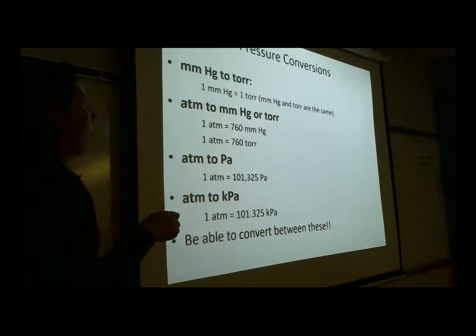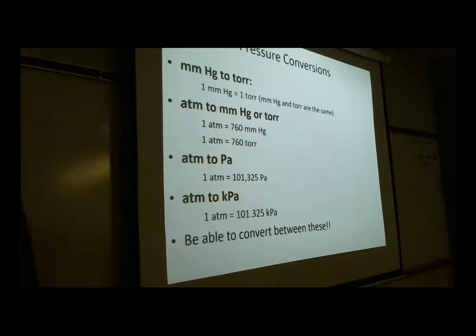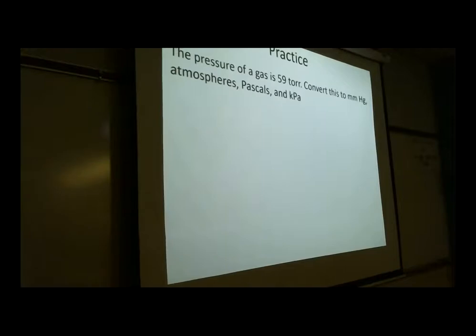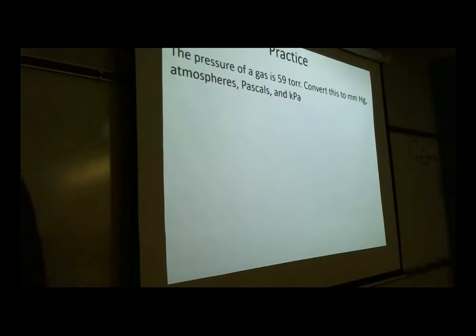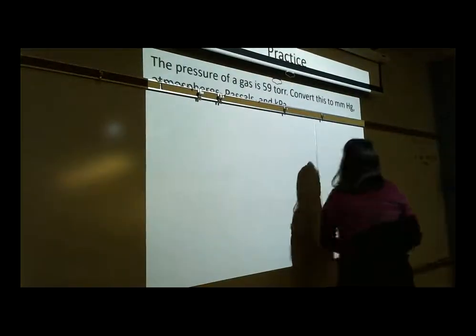Key conversions: mmHg and torr are the same thing. 1 atm = 760 mmHg = 760 torr. 1 atm = 101,000 Pa = 101 kPa. Practice: convert 59 torr into mmHg, atmospheres, pascals, and kilopascals using your handout by setting up conversion factors.